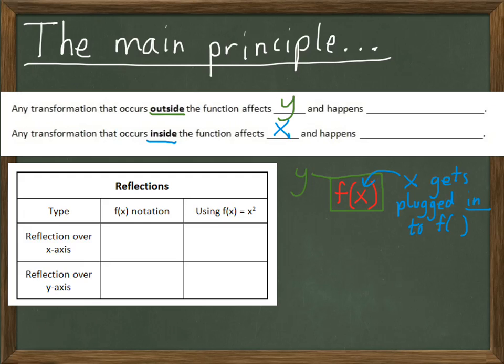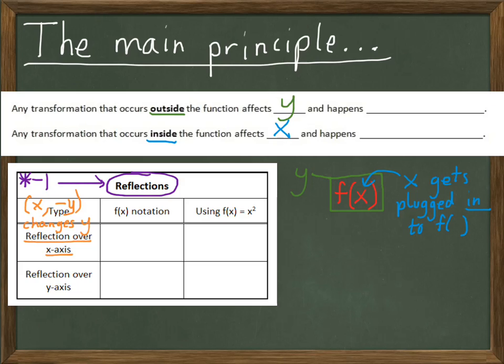Let's take a look at how this happens with reflections — those are generally the easiest. When we do a reflection, you're used to multiplying the coordinates by negative 1. We either multiply all the x's or multiply all the y's and change the sign. So, let's look at a reflection over the x-axis. When we do a reflection over the x-axis, remember that we're changing y. The mapping associated with this is (x, negative y) — we're taking y and changing the sign, multiplying by negative 1.